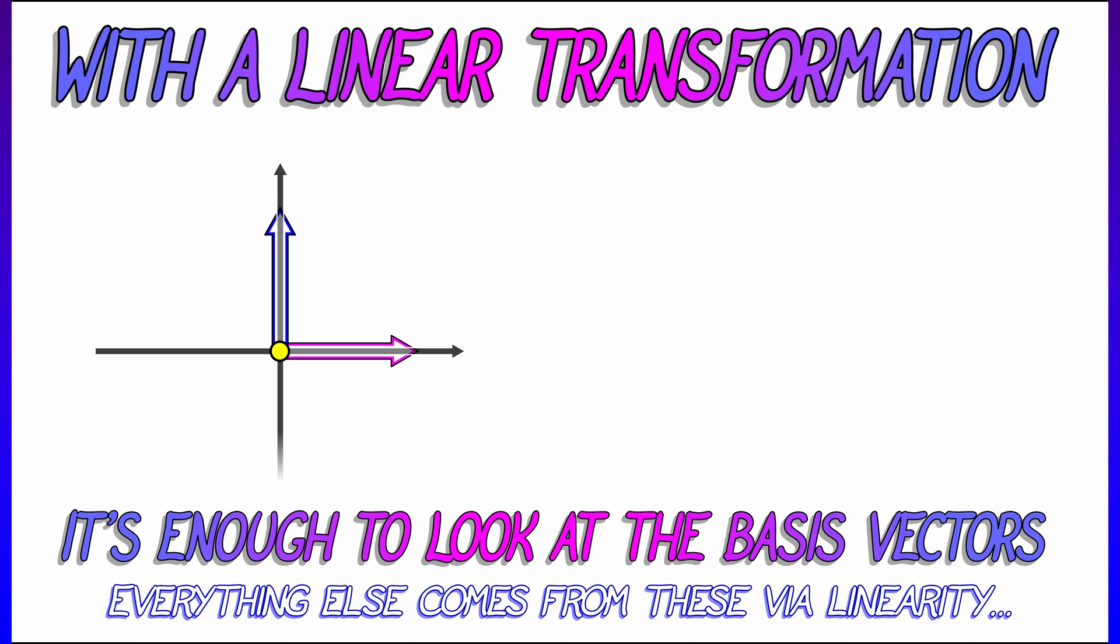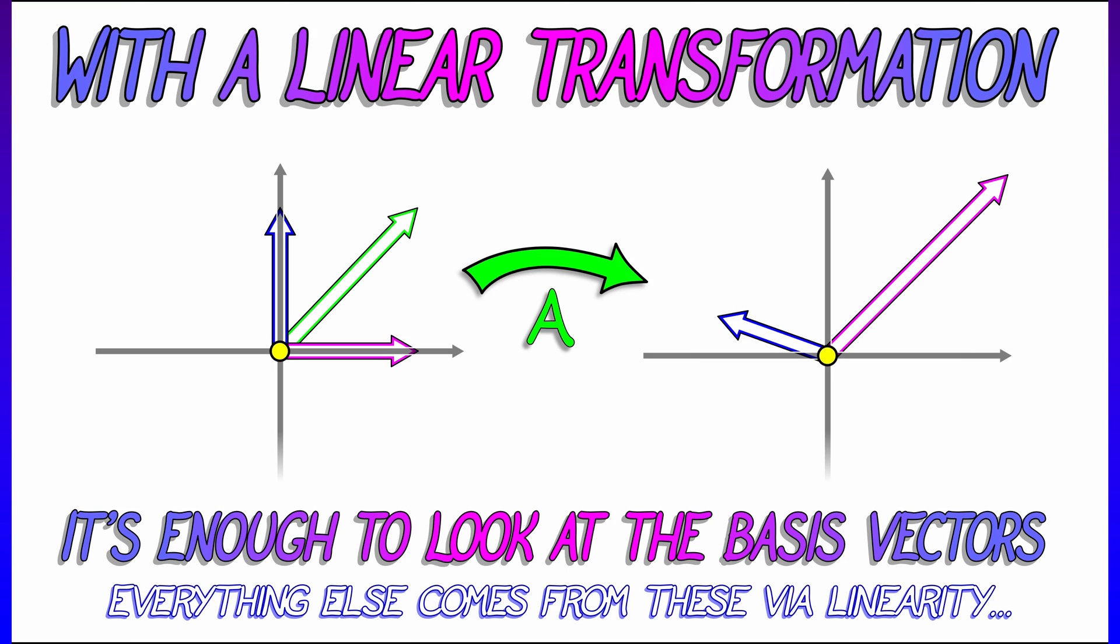So in the two by two case, think of basis vectors i and j in the plane, and look at what A sends them to. Look at A times i, look at A times j. These are, again, vectors in the plane. By linearity, we can figure out everything else.